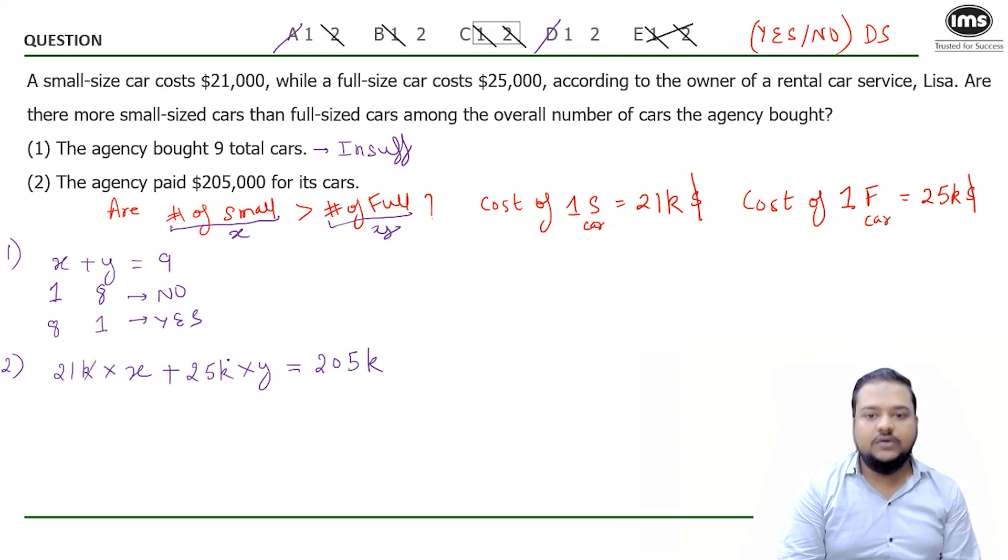We can cancel off this thousand because that is common. So we have an equation 21X plus 25Y equals 205. Now we might think that this equation looks very much similar to the first case, and again we might be getting multiple cases, and hence we can say statement is insufficient. Don't make haste guys. There is a point where the GMAT people set a beautiful trap.